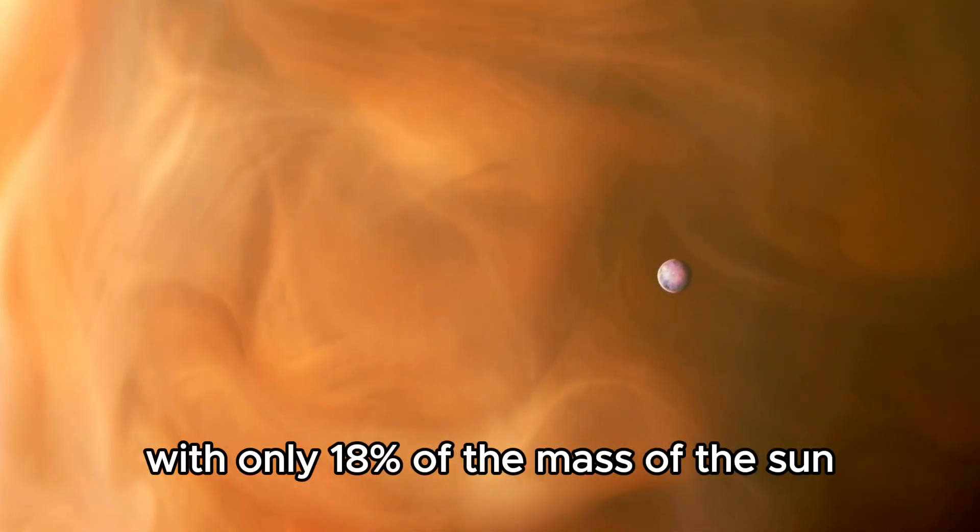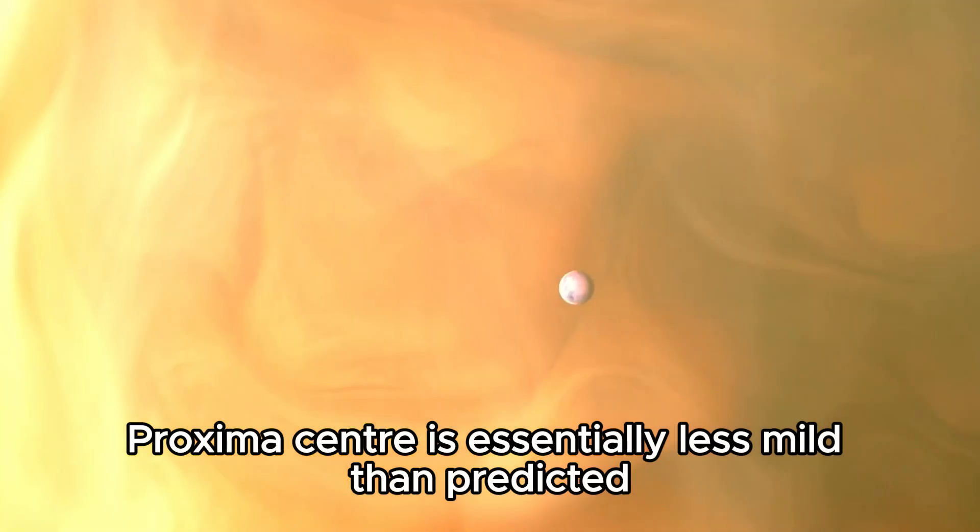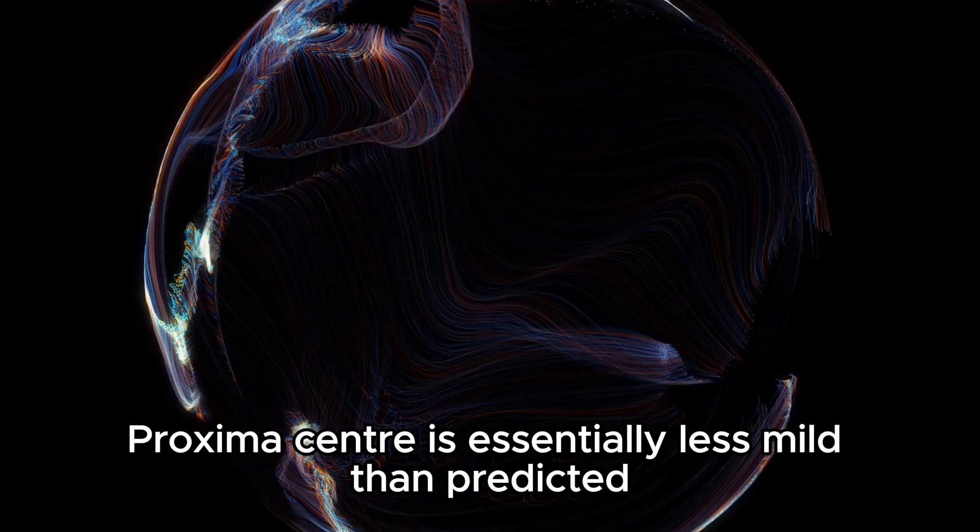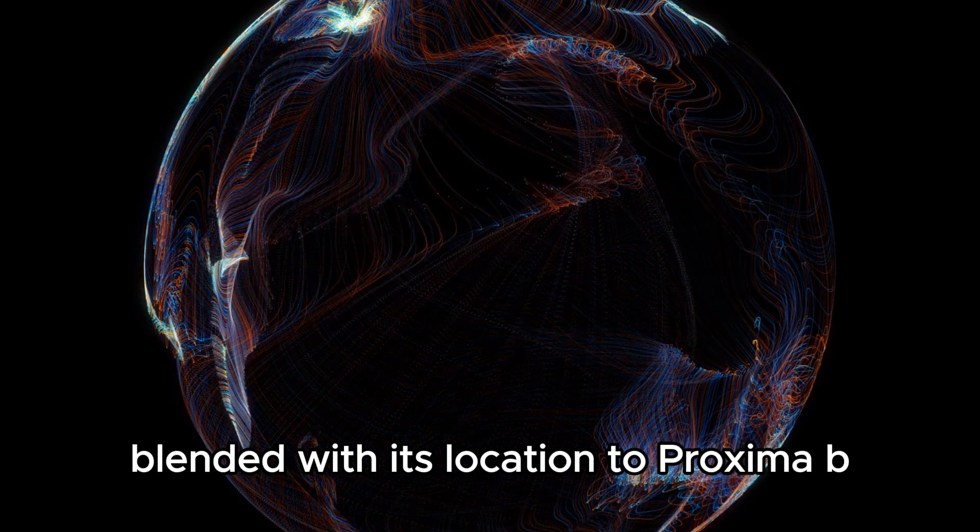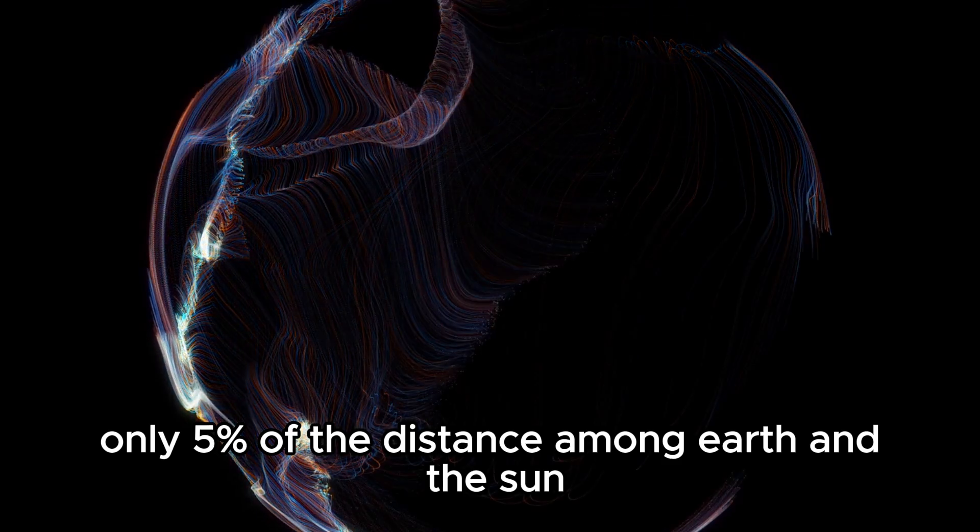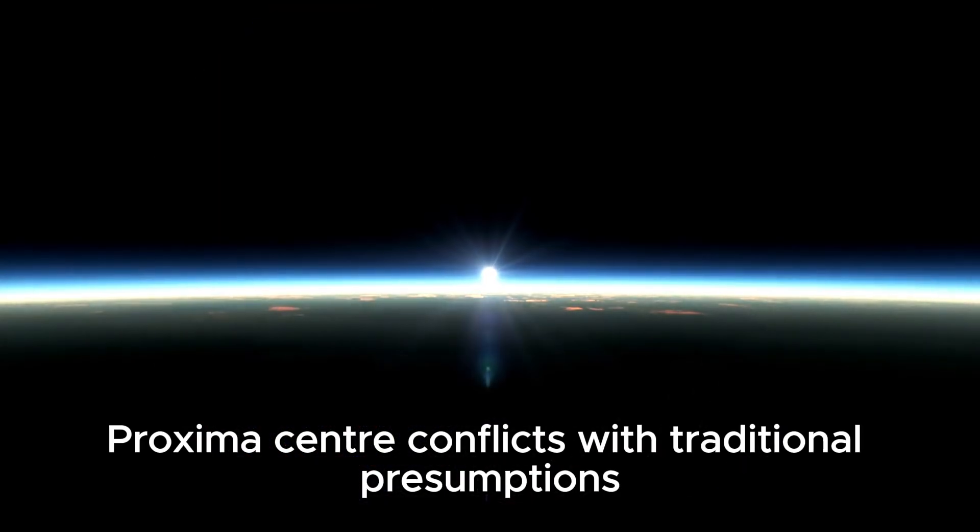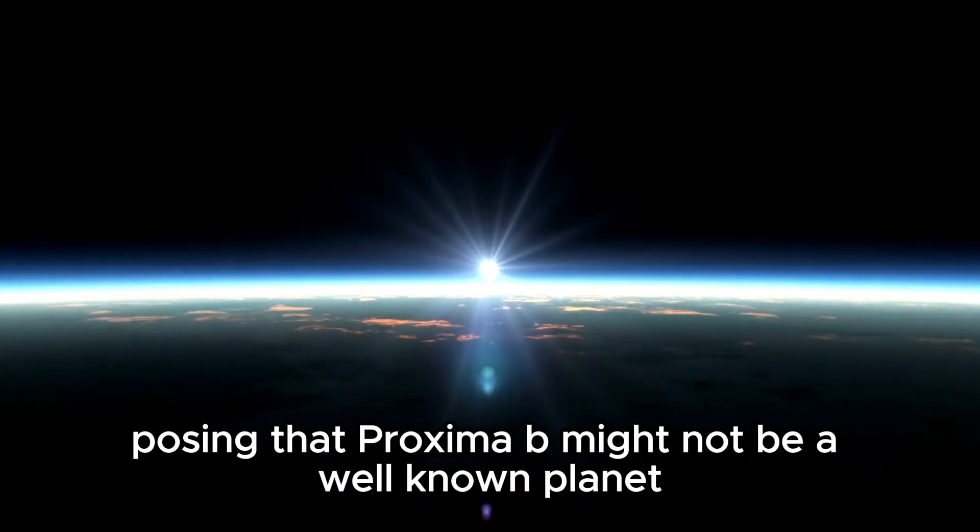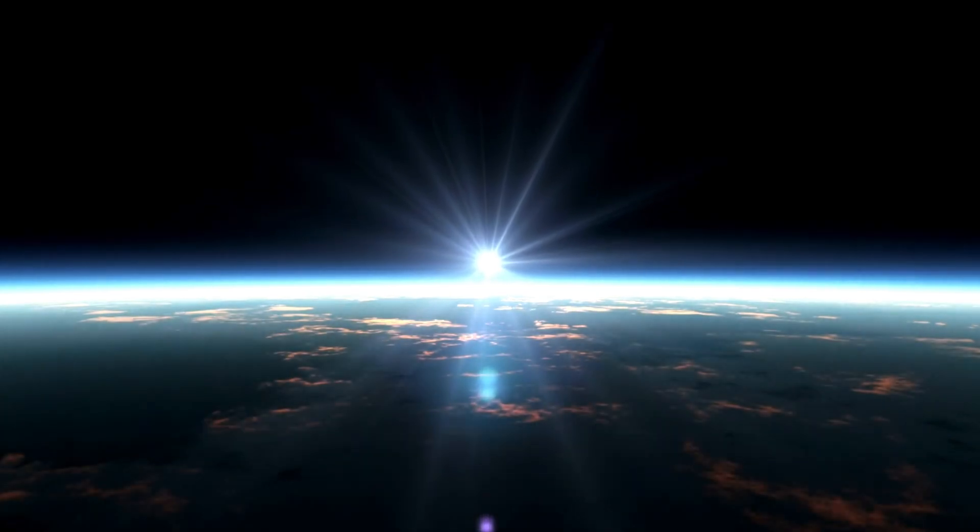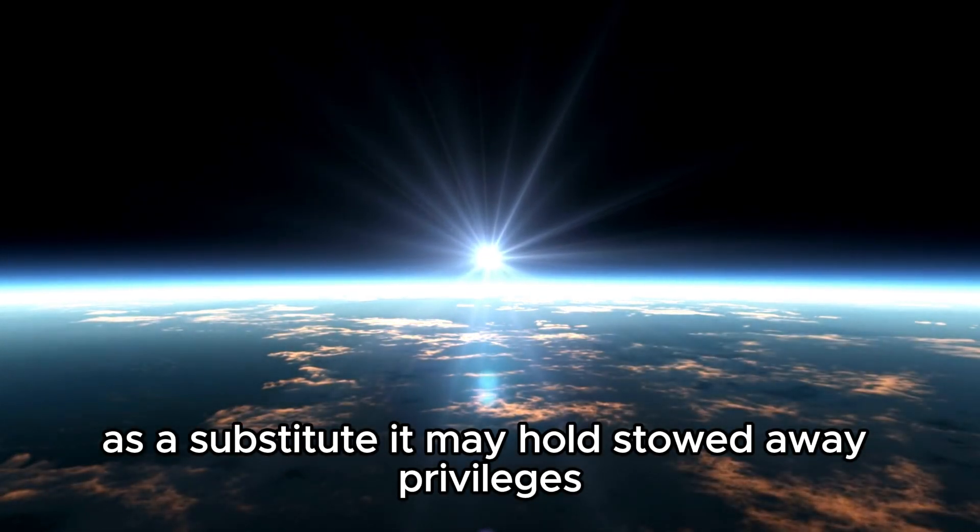With only 18 percent of the mass of the Sun, Proxima Centauri is essentially less luminous than expected. Combined with its location to Proxima B, only 5 percent of the distance among Earth and the Sun, Proxima Centauri conflicts with traditional presumptions, posing that Proxima B might not be a typical planet. Instead, it may hold hidden privileges.